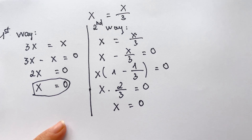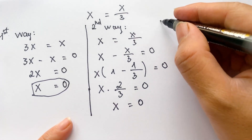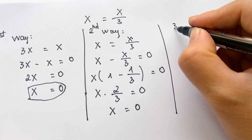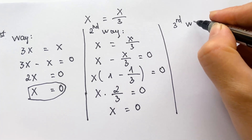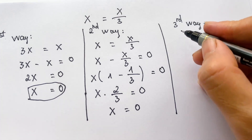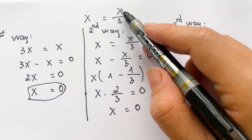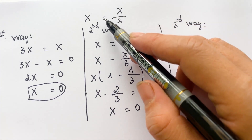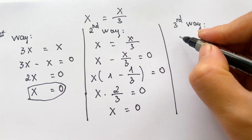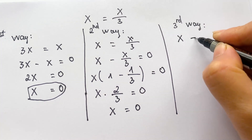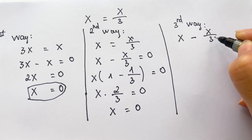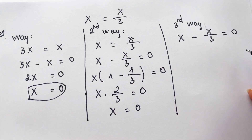The last way — the third way. Everyone look at that. We need to move to get two x over three on the left hand side, so we need to change the other factor. We have x minus x over three equals zero.